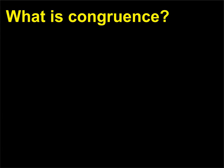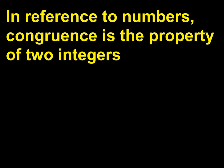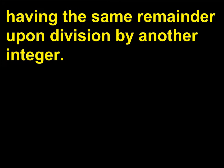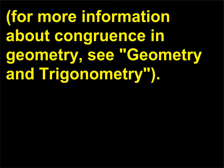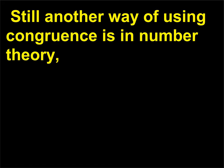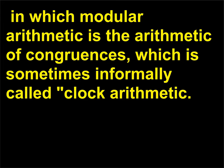What is congruence? In reference to numbers, congruence is the property of two integers having the same remainder upon division by another integer. The term is also often used in geometry to describe a property of geometric formations. Still another way of using congruence is in number theory, in which modular arithmetic is the arithmetic of congruences — sometimes informally called clock arithmetic.